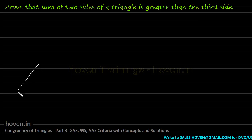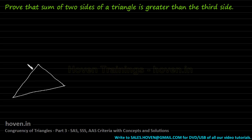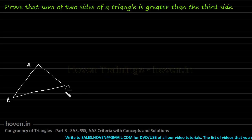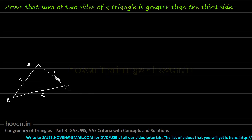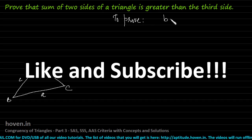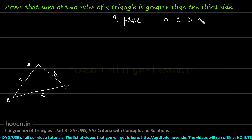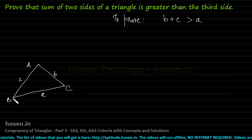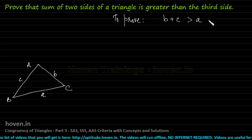Suppose this is any triangle A, B, C. Let this side be A, this side be C, and this side be B. We have to prove that B plus C is greater than A. Merely looking at this figure and trying to prove this fact